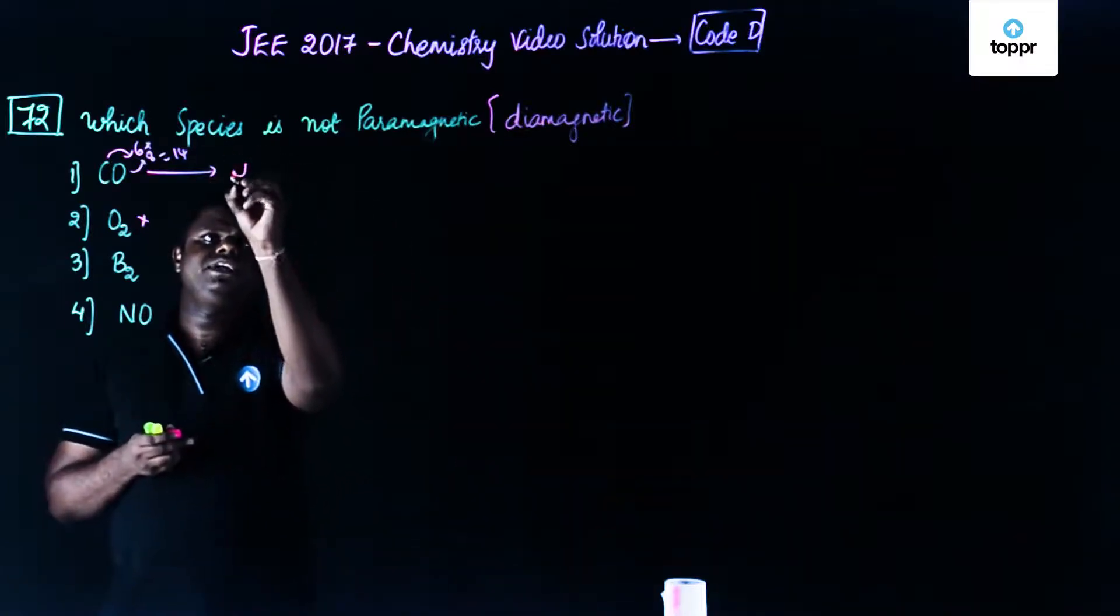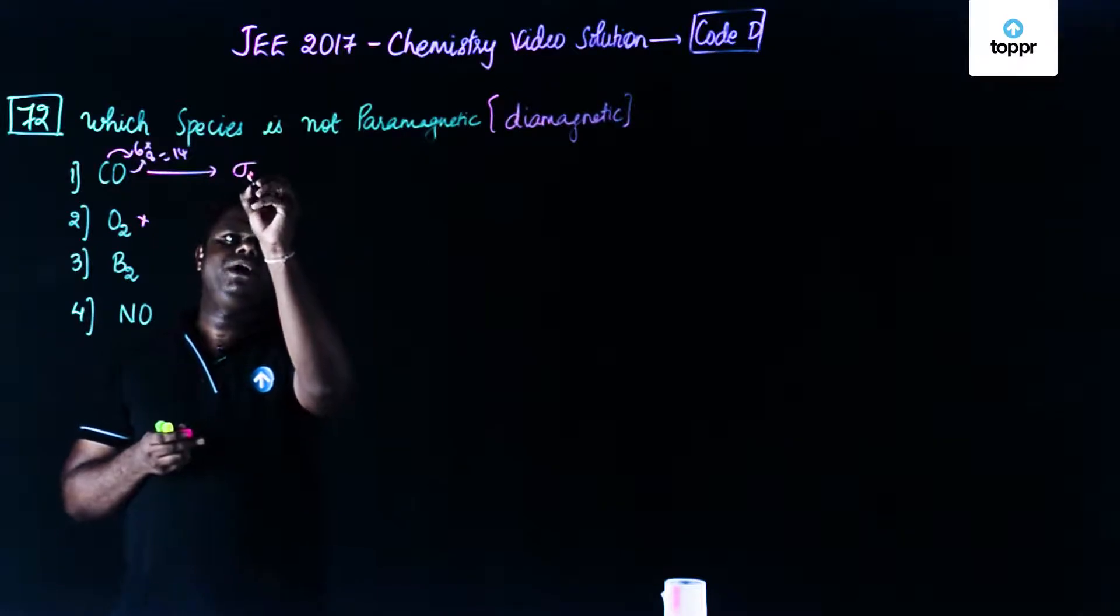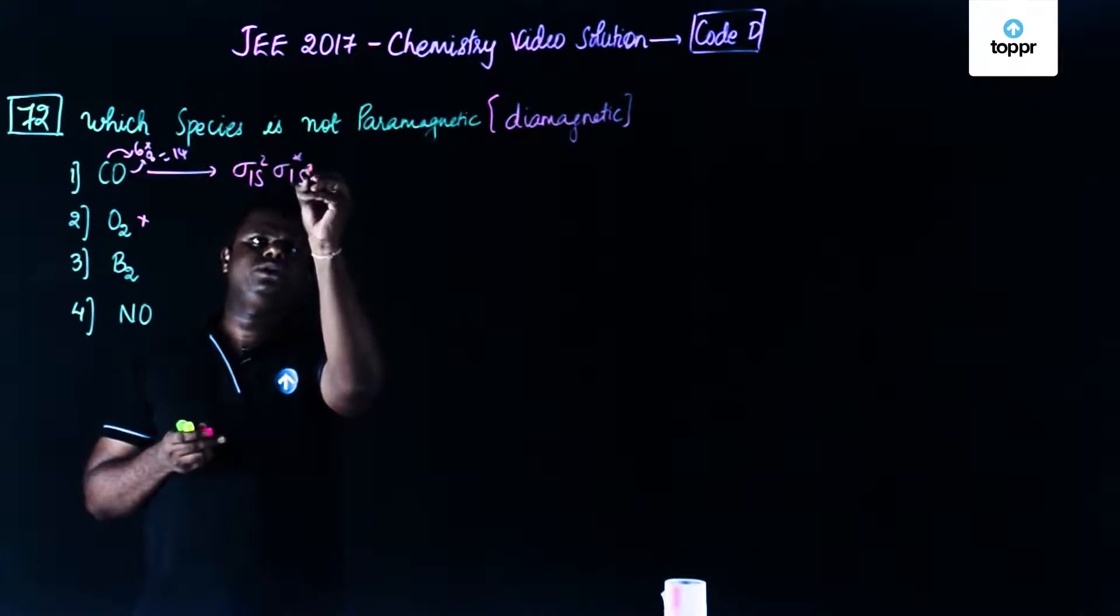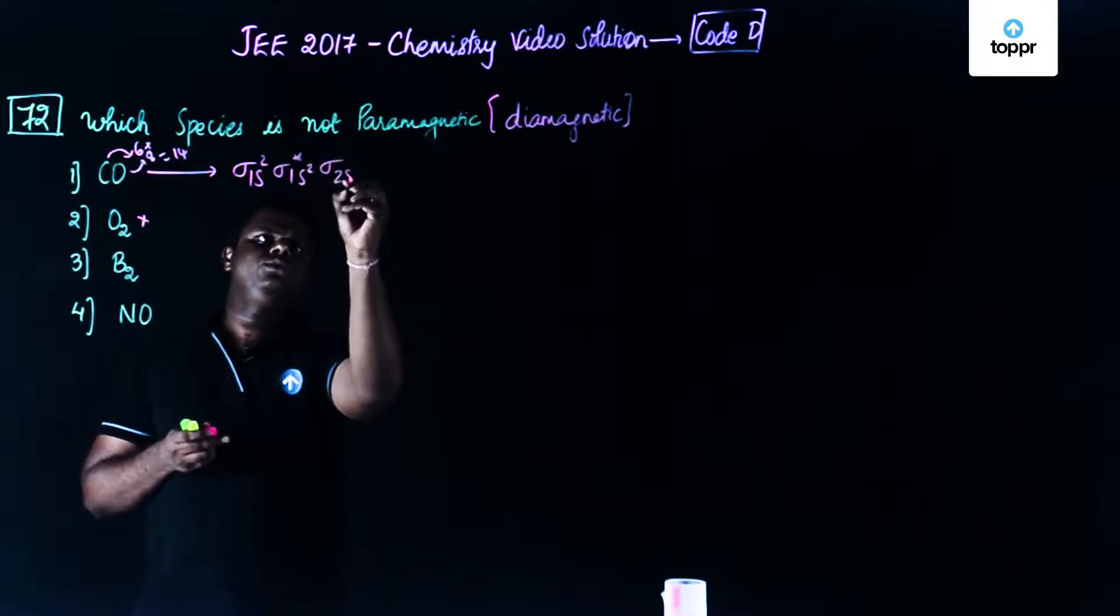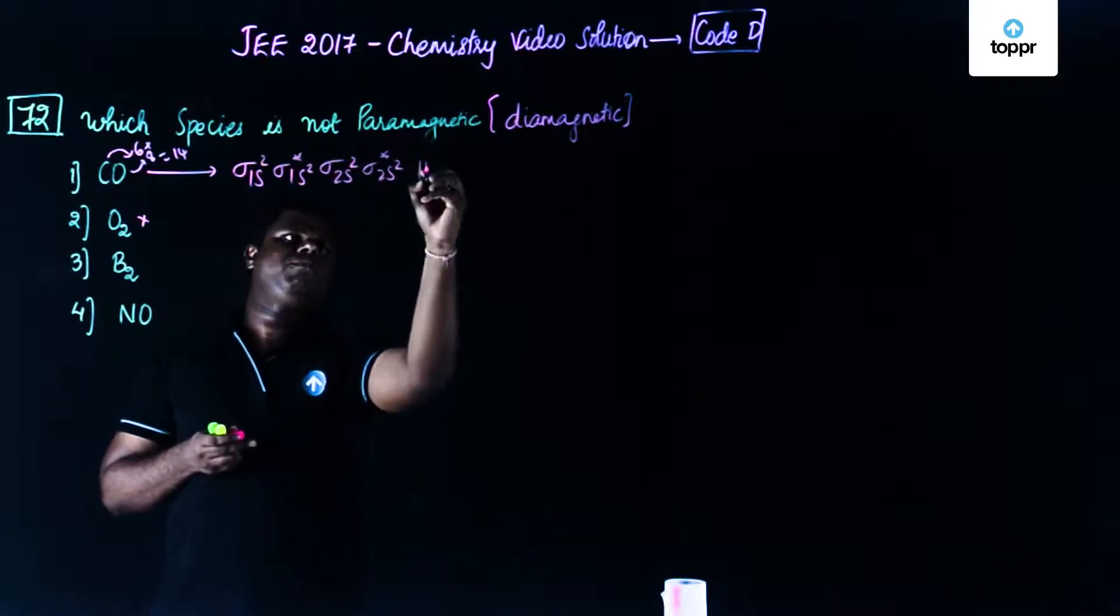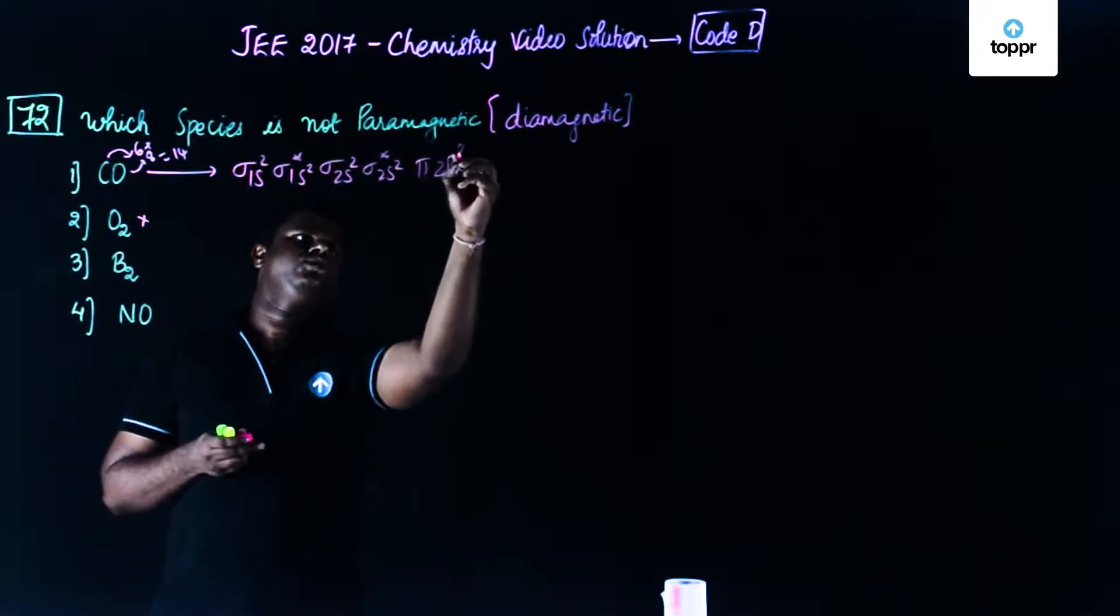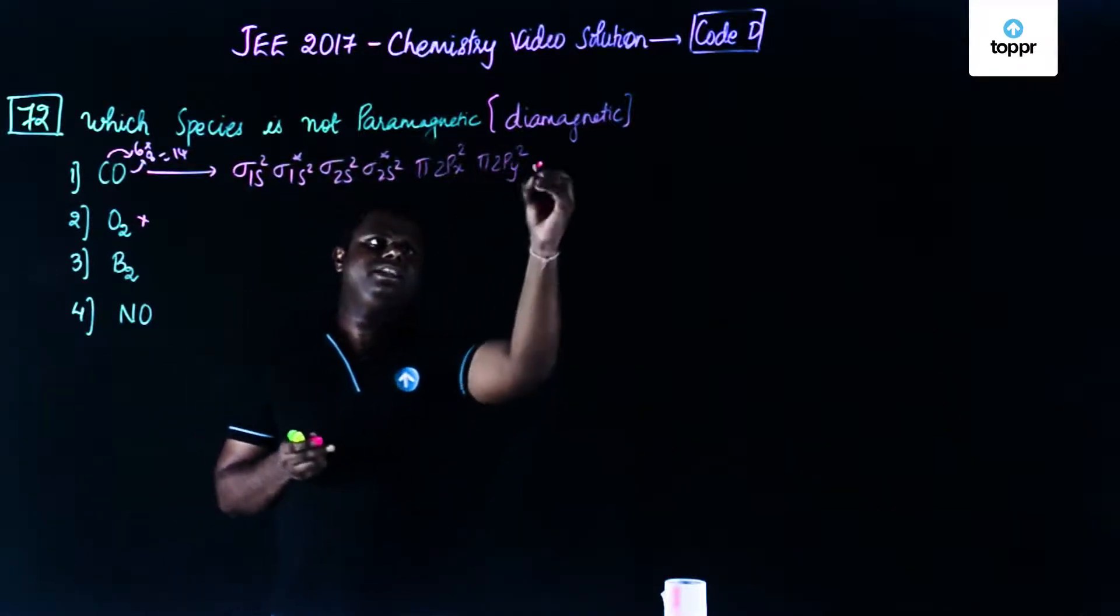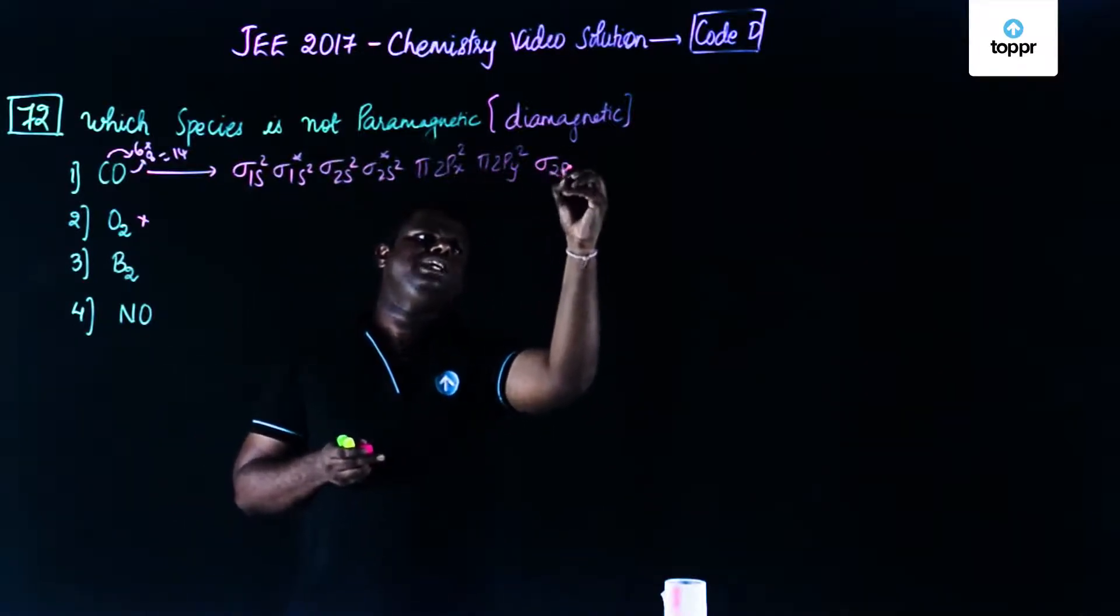Electronic configuration would be sigma 1s2, sigma anti-bonding 1s2. Then you have sigma 2s2 then sigma star 2s2. Then you have pi 2px2, pi 2py2, they are on the same level and then you have sigma 2pz2.